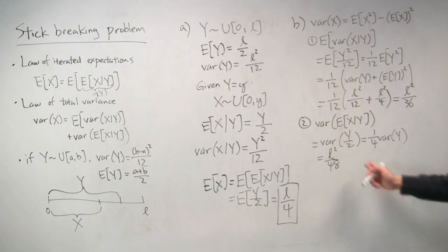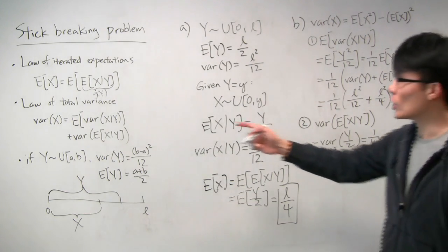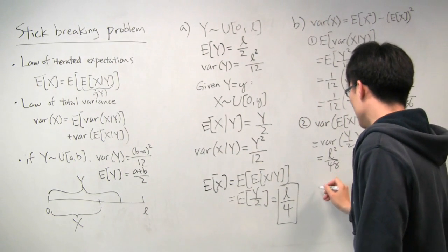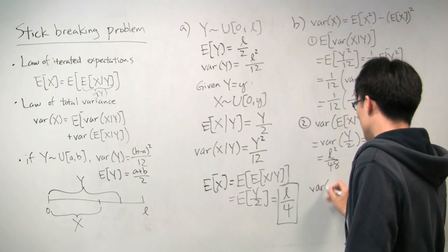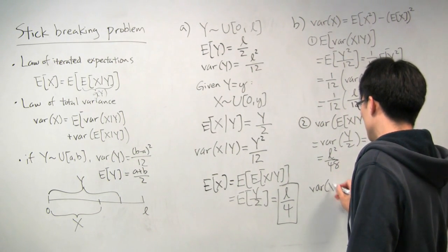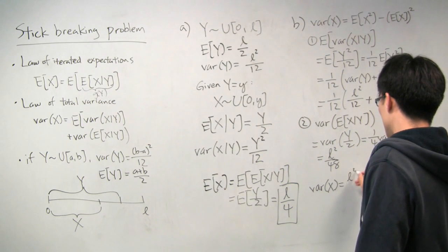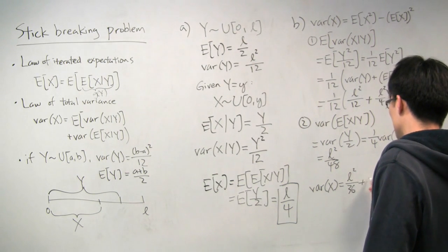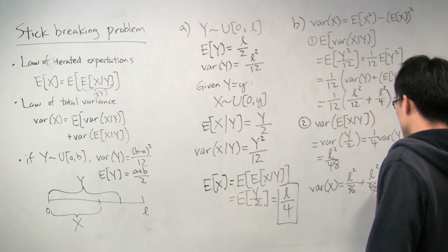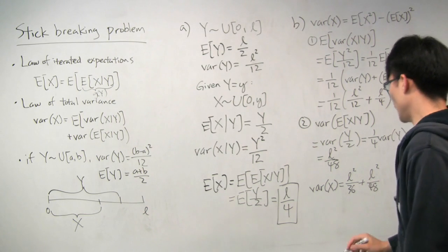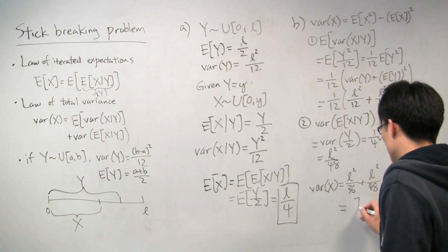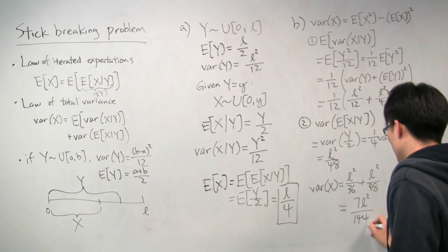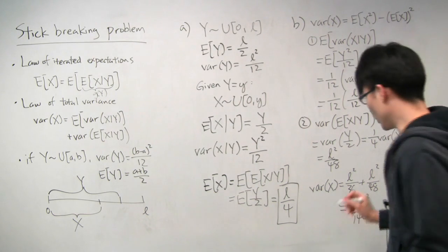We've now calculated both terms of the total variance. All we need to do is add them: l² over 36 plus l² over 48, which gives a final answer of 7l² over 144.